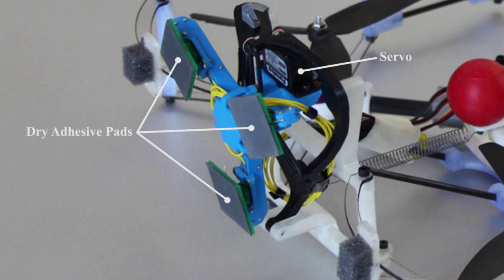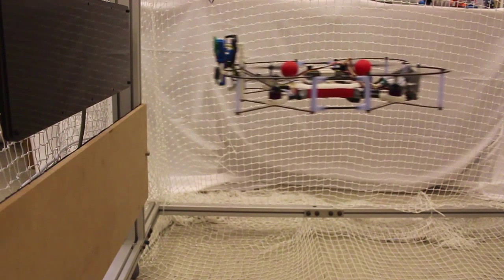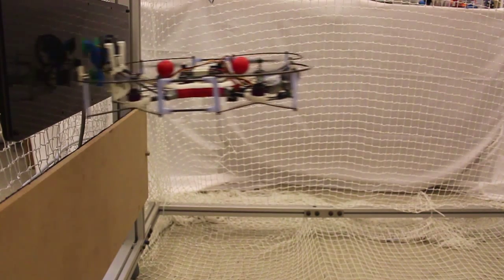The gripper is mounted in the front of the MAV. This makes perching possible by simply flying toward and hitting the target surface.